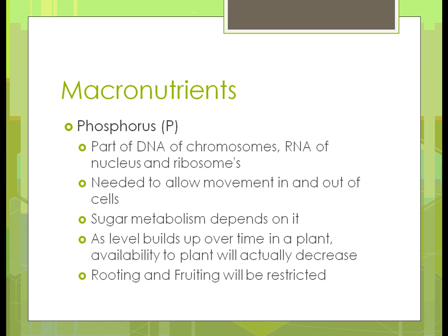The metabolism — converting CO2 into sugar — won't happen without phosphorus. But as phosphorus levels build up in a plant, availability actually decreases. In most fertilizers, phosphorus is now being removed because we're getting too much in the soil, and if there's too much, the plant won't use it. We need to find ways to unbind the phosphorus that's already in the soil. A lack of phosphorus leads to poor rooting and fruiting — smaller root systems and smaller fruits, corn cobs, and so on.